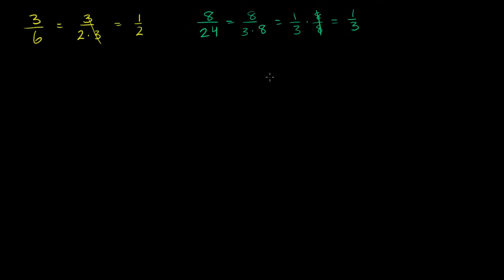The same exact idea applies to rational expressions. These are rational numbers. Rational expressions are essentially the same thing, but instead of the numerator being an actual number and the denominator being an actual number, they're expressions involving variables. Let me show you what I'm talking about.